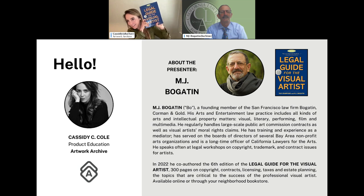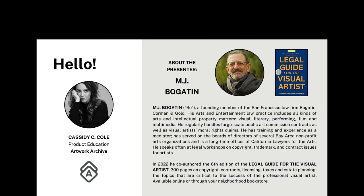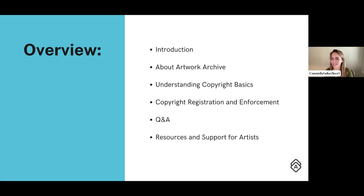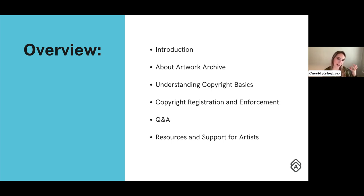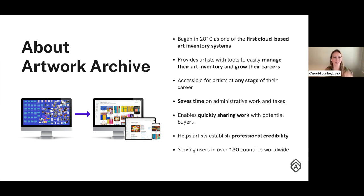I actually have my copy here and it's so helpful. We're so glad to have you, Bo. In 2002 he co-authored the sixth edition of the Legal Guide for the Visual Artist book — 300 pages on copyright, contracts, licensing, taxes, and estate planning. These are all topics critical to the success of the professional visual artist, and it is available online or through your neighborhood bookstore. We'll also provide the slides from this presentation in the follow-up email.